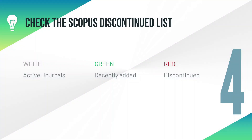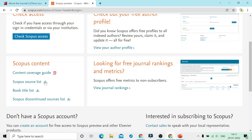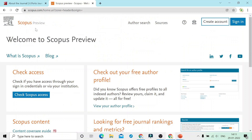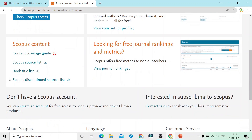The fourth step is to check the Scopus discontinued list. In this list, journals that are active are shown in white, journals that have been recently added are shown in green, and journals that have been discontinued from Scopus are shown in red. Go to the Scopus official homepage, navigate to the Scopus Discontinued Source List, and you will be able to download the list of discontinued journals.